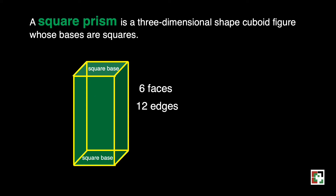So a total of six faces. This square prism also has vertices. Let's count the number of vertices: 1, 2, 3, 4, 5, 6, 7, and 8. There are a total of eight vertices.